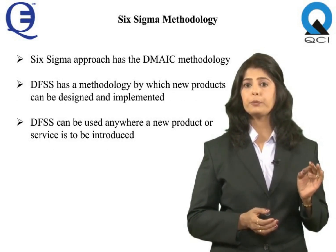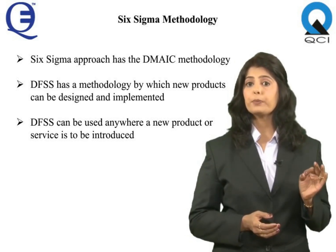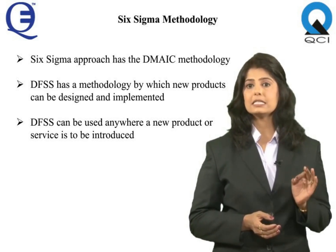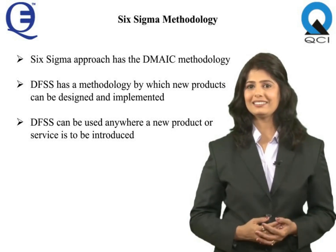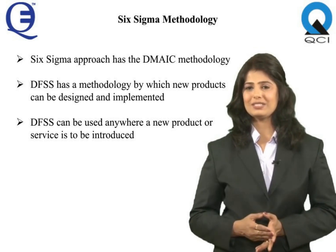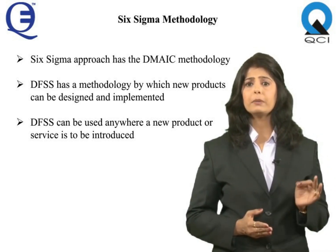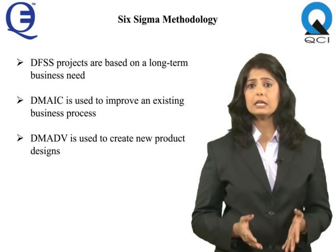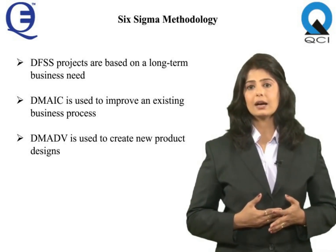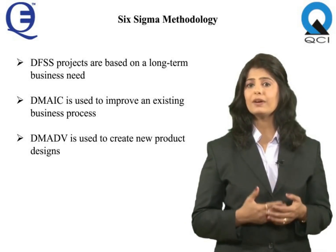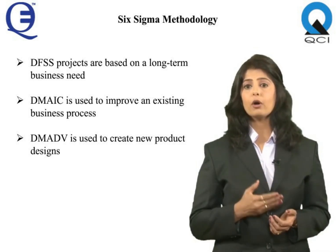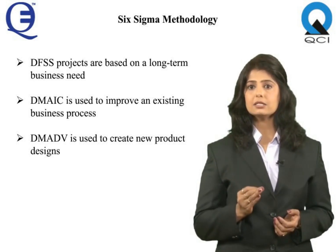Just as Six Sigma has the DMAIC methodology by which processes can be improved, DFSS also has a methodology by which new products and services can be designed and implemented. Design for Six Sigma can be used anywhere a new product or service is to be introduced or reintroduced. DFSS projects are often much larger, take longer, and are based on long-term business needs rather than a short-term need to fix a customer problem. DMAIC is used to improve an existing business process, while DMADV is used to create new product or process designs resulting in more predictable, mature, and defect-free performance.